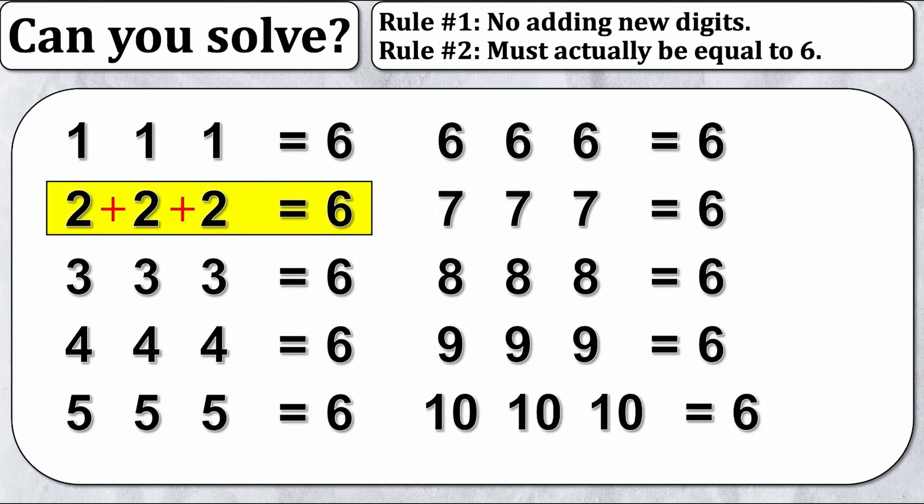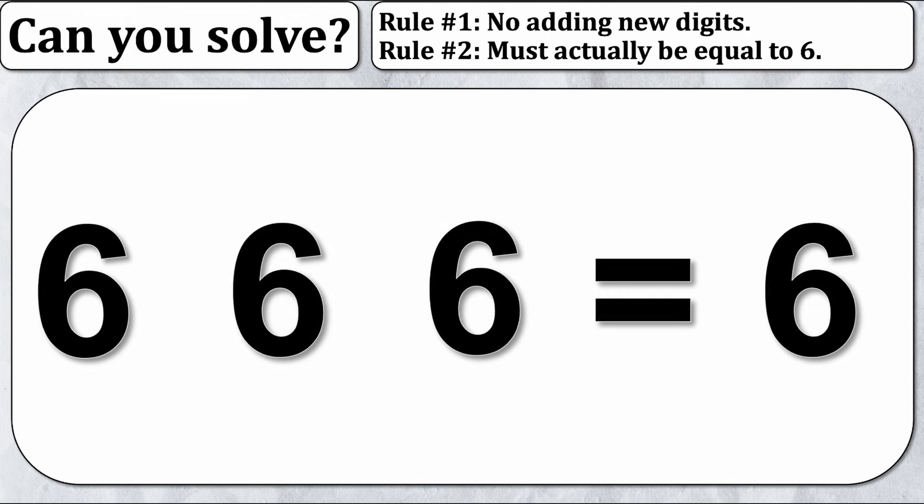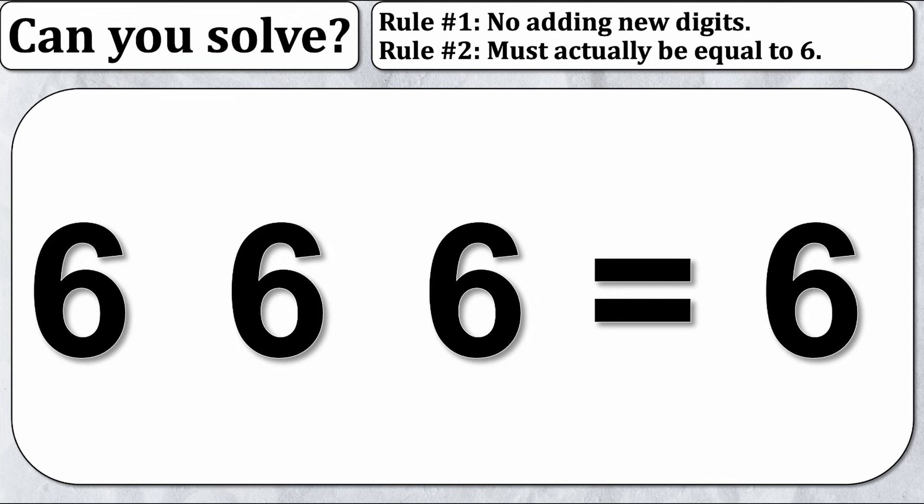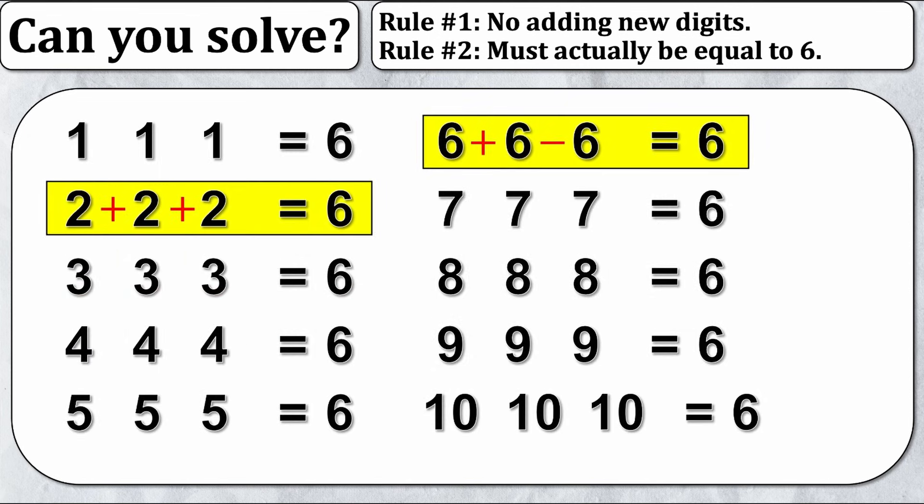Let's take a look at the second easiest one, and that's six. Well, six plus six is twelve minus six is six. Again, there's many other ways to do it, but for the purpose of this video I'm just going to settle on one.